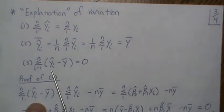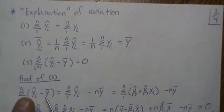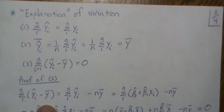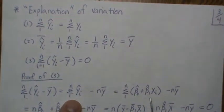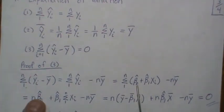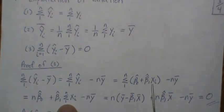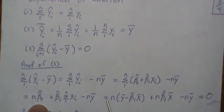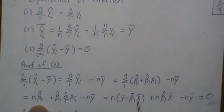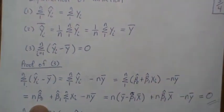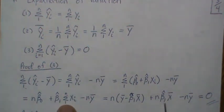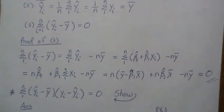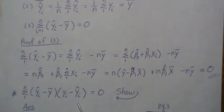Let's prove Result 3: the sum of residuals equals zero. We multiply out, take the sum — there's no index so we get N of them. We replace beta-hat-zero with Y-bar minus beta-hat-one times X-bar. We get N·Y-bar minus N·Y-bar, and the N·beta-hat-one·X-bar terms cancel, giving zero.